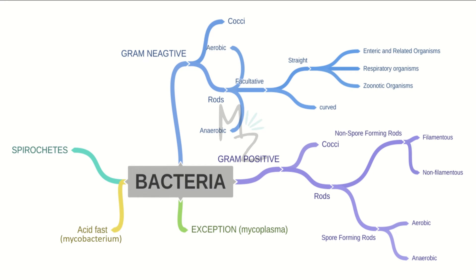Gram positive bacteria is further classified into cocci and rods. The rods of gram positive bacteria are further classified into spore-forming rods, which are further classified into aerobic and anaerobic, and also non-spore-forming rods, which are further classified into filamentous and non-filamentous.